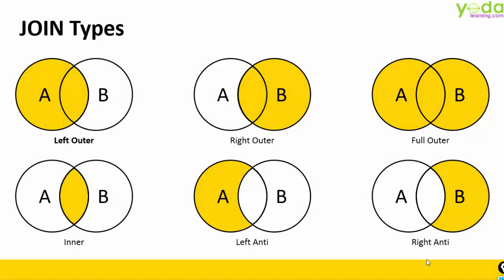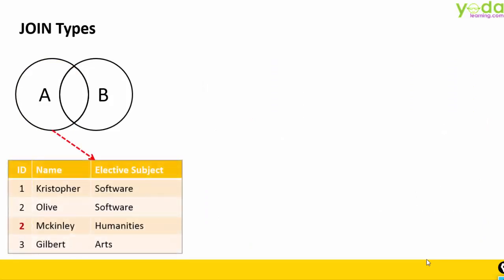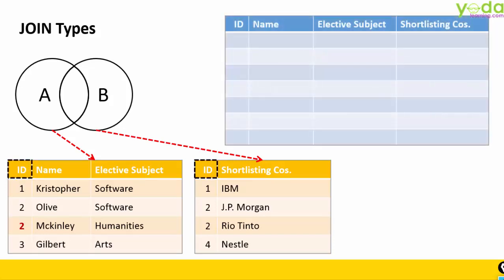Let us understand what are the six Join Types and how they can be useful to you. To illustrate the example, I will take two tables. Table A, which will have four names, and you will notice there are two people who share the same ID code. Next, Table B — these four people may have been shortlisted by companies for interview. The common thing between them is the ID code.